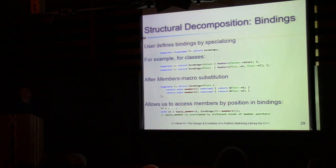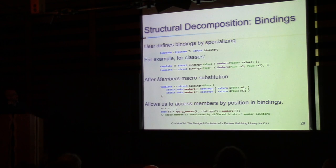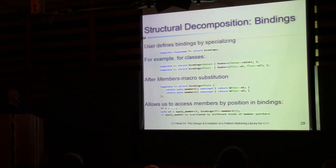Implementation examples: the wildcard pattern — for any type T, always returns true. The value pattern — parameterized on an actual value, matches if the stored value equals the subject. The variable pattern — stores the value to be bound, assigns it, and returns true. If the type is different, we try to convert it and check they still compare equal. The constructor pattern stores sub-patterns directly, and in its match operator extracts the binding members from the subject and tries to match each sub-pattern with the corresponding member — if both match, the constructor pattern matches.